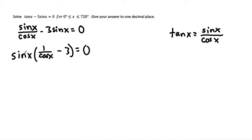From here, now that we have two things that are multiplied that equal 0, we can set them equal to 0 separately. So we can write this as sine x is equal to 0, and 1 over cos x minus 3 is equal to 0.